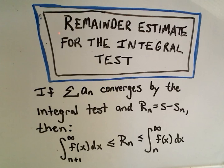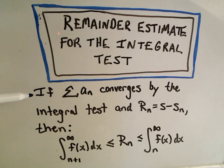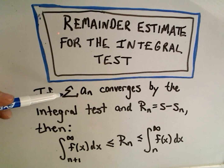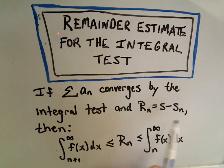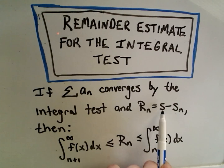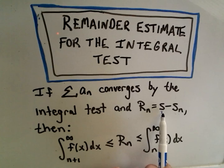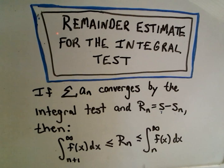This video is about the remainder estimates for the integral test. The remainder estimate says that suppose you have a convergent series — S of n is the partial sum of the first n terms, and S represents the sum of all infinitely many terms. The difference between your estimate and the true value we call R sub n.